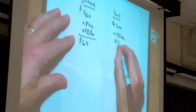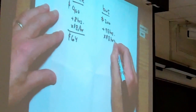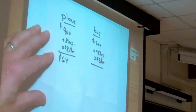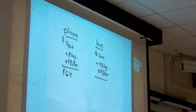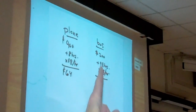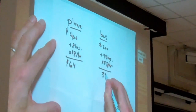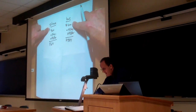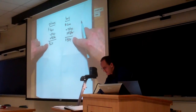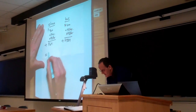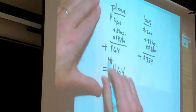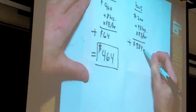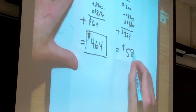Then we do the same for the bus: 48 hours times $8 an hour. For simplicity, 50 times eight is 400, subtract 16, giving us $384. Once we've got the financial cost and the time cost, we add them together. The total cost of the plane is $464. The total cost of the bus is $200 plus $384, which equals $584.